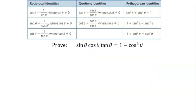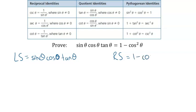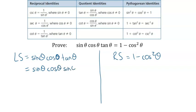We still have our eight building block identities here. The question says: prove sine theta cos theta tan theta equals one minus cos squared theta. The first thing I'm going to do is separate this into the left side and the right side. The left side is sine theta cos theta tan theta, and the right side is one minus cos squared theta. I haven't changed anything yet — I'm just separating those two sides, not rearranging. I'm proving that one side is equal to the other.